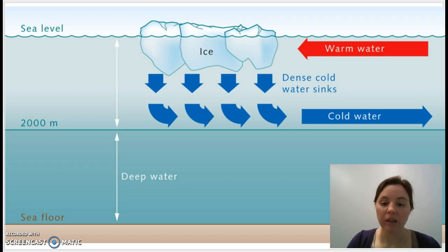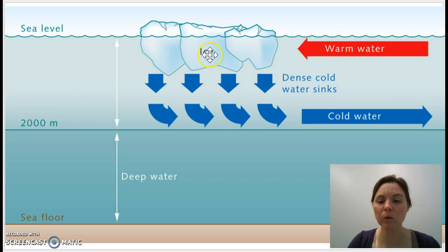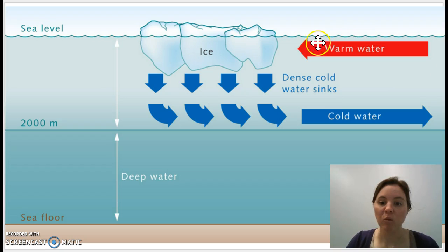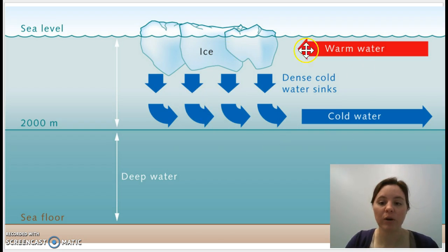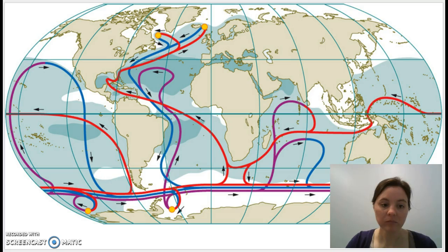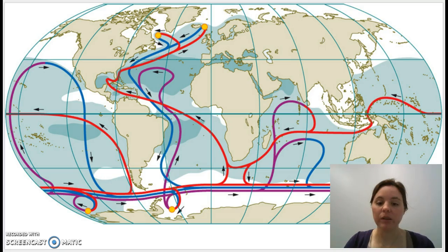Up at the North Pole and down at the South Pole, warm water comes in, gets really cold, forms ice, and that water becomes very cold and dense and sinks down to about 2,000 meters. It travels southward if we're at the North Pole, and then more warm water comes in to take its place, and the whole process repeats. This gives us the thermohaline currents — 'thermo' meaning temperature and 'haline' meaning salt — driven by differences in density created by differences in temperature and salt content.